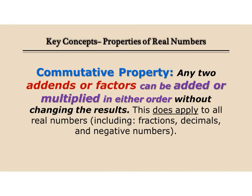The commutative property says that if you take two numbers and add them, or numbers and multiply them, you can do it in any order and the answer doesn't change. 2 and 3 is 5; 3 and 2 is 5. 2 times 3 is 6; 3 times 2 is 6. That is the commutative property.